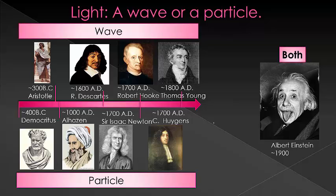Once Einstein came along, he solved the debate — for at least what appears at the moment to be for good — and says that light has both wave and particle-like properties, and therefore is either or both, depending on how you want to think about it. Here we'll talk about the two most famous experiments that established both wave and particle-like properties.